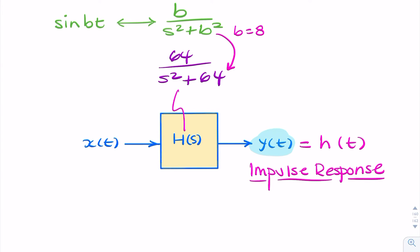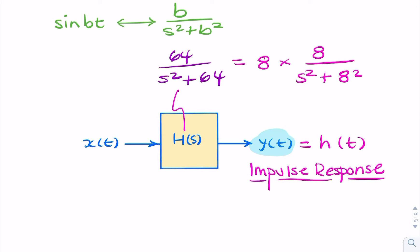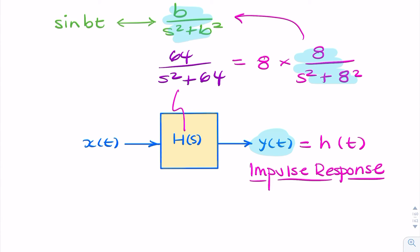If b is 8, we can rewrite this as 8 times 8 over s squared plus 8 squared. Now the resemblance to the table entry is really clear — the inverse Laplace transform is simply sine(bt). So we can say h of t equals sine(b), which is 8, times t.